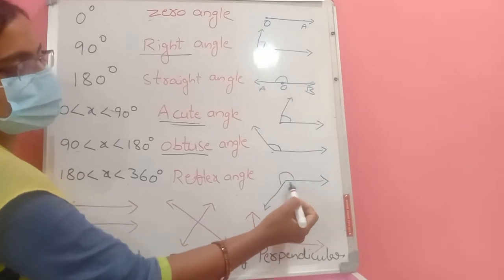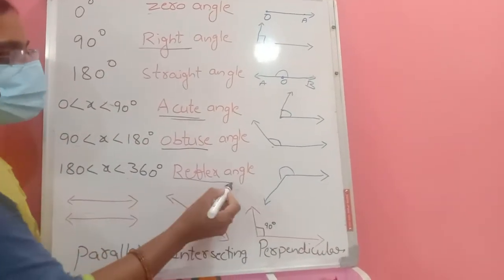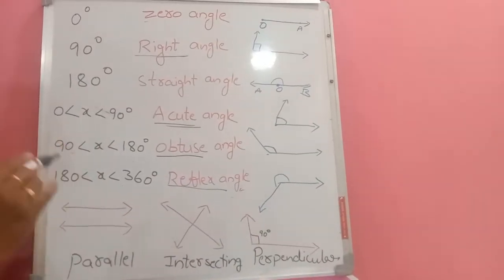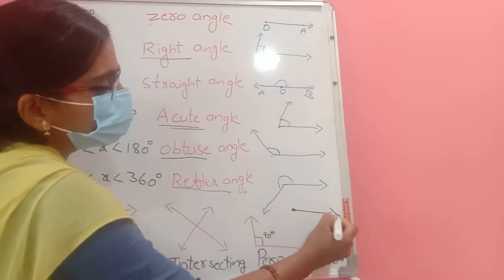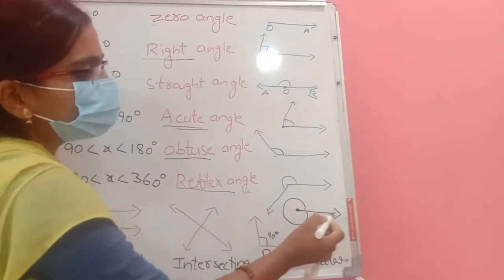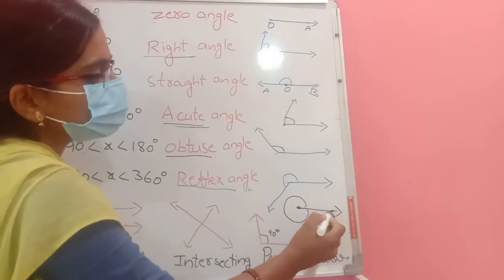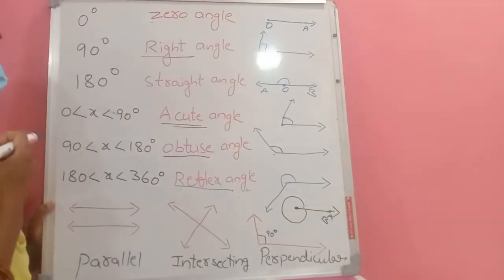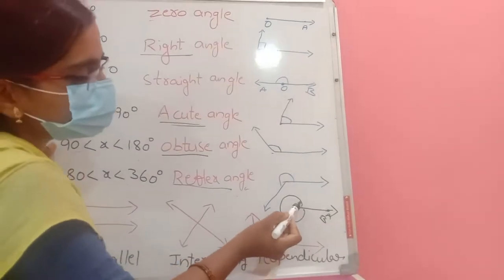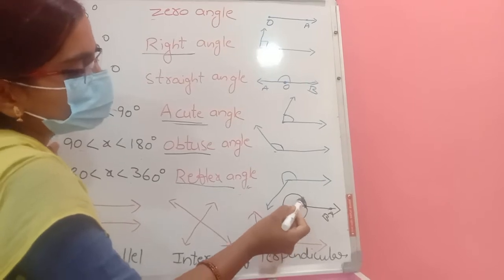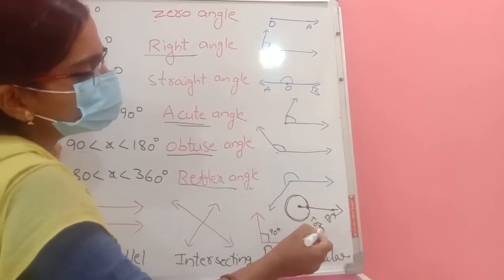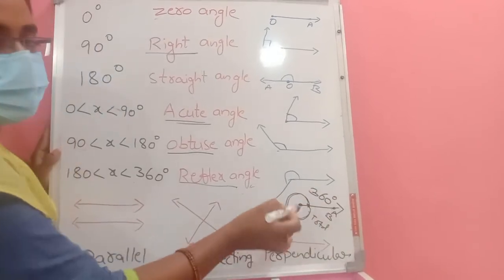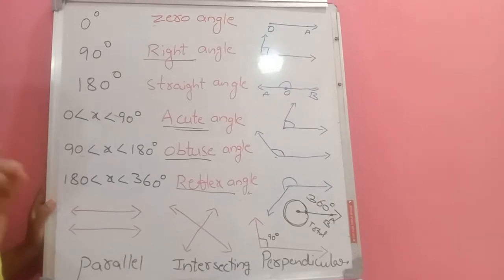An angle between 90 and 180 degrees is called an obtuse angle. After 180 degrees up to 360 degrees, the angle is called a reflex angle. If the ray moves all the way around and returns to the same position, that total angle is called a complete angle and is always equal to 360 degrees.